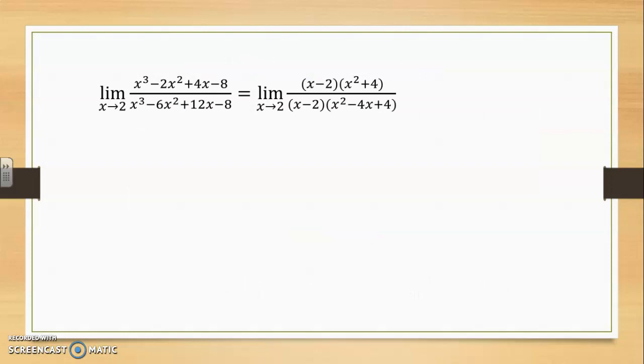So using the work we've just done, we have a replacement for the original limit that we set off to calculate. The common factor x minus 2 can be eliminated since the limit is not taking place at 2, but rather as we head towards 2.